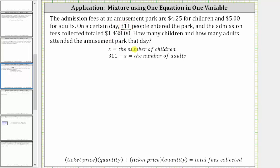And now we can write an equation in order to answer the question. Our equation is going to be the ticket price for the children times the number of children plus the ticket price for adults times the number of adults. And the sum of these products must equal the total fees collected.